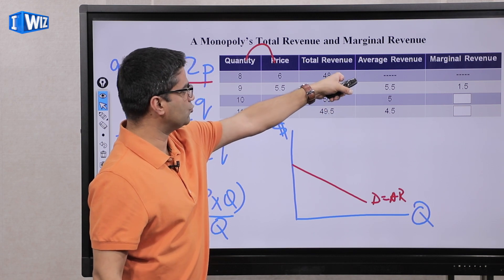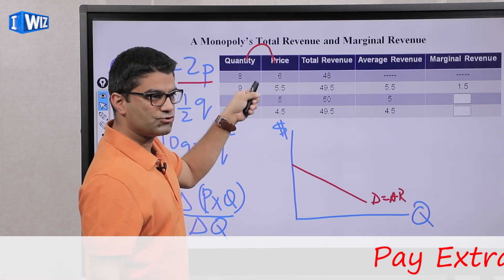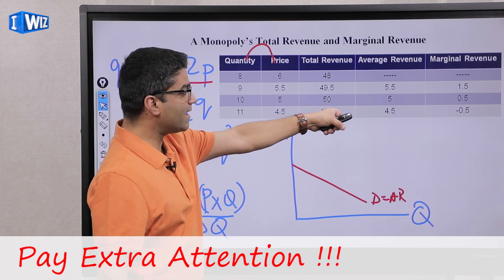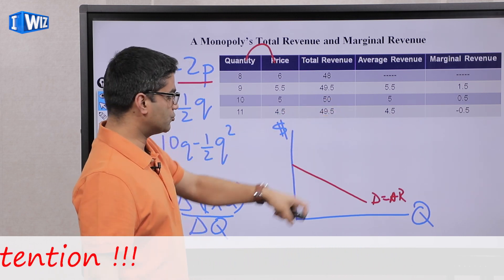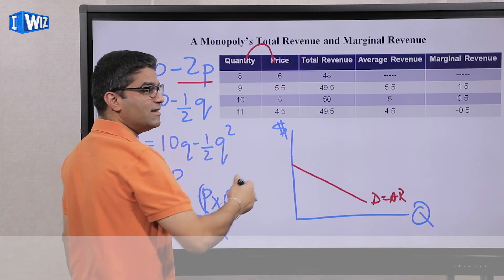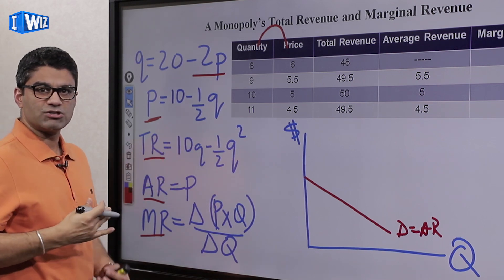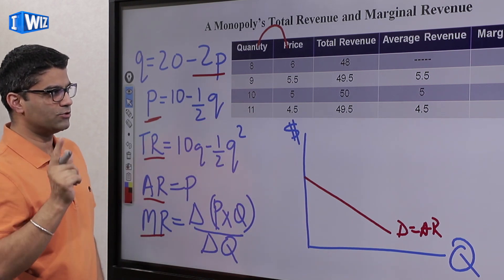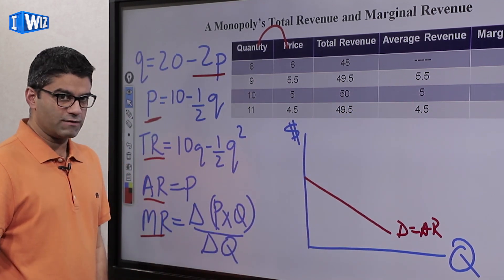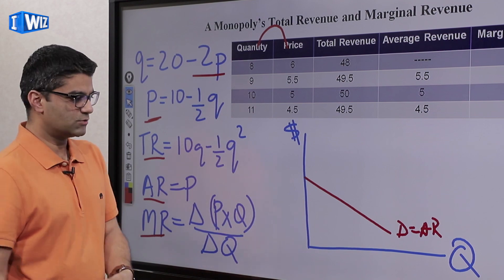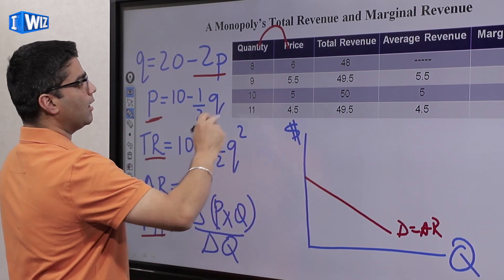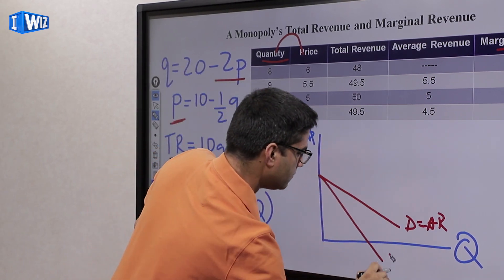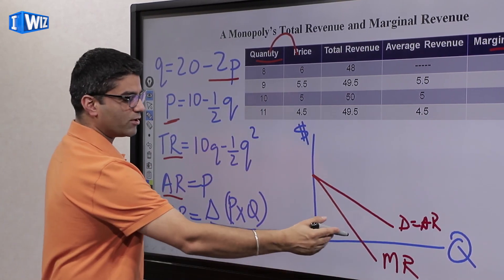Marginal revenue is the change in total revenue divided by change in quantity. For example, going from 8 to 9 units the change in revenue is $1.50 divided by a change in quantity of 1, so MR = $1.50. Then the change in revenue is $0.50, and then it becomes negative $0.50 because revenue falls from $50 to $49.50. Total revenue increases for some quantity level and then decreases. Therefore marginal revenue is positive, declines, and eventually becomes negative — and when graphed it will be below the demand curve and will cross the horizontal axis.